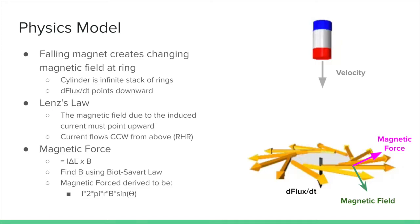The main physics model used in this lab is visualized to the right. The falling magnet creates a changing magnetic flux at the ring, where the cylinder is made up of an infinite stack of such rings.